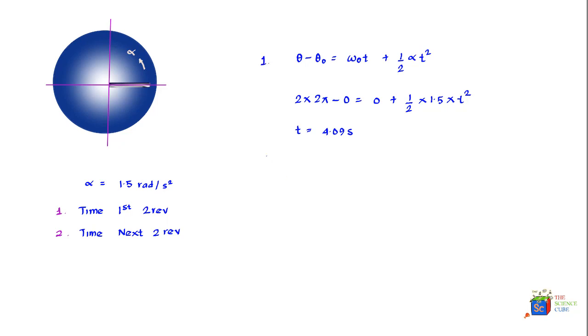To find the time taken for the next two revolutions, we'll find the time taken to do four revolutions total—first two plus next two. Using the same equation, on the left-hand side this time the total displacement would be four revolutions times 2π, converting to radians, minus the initial position of zero.